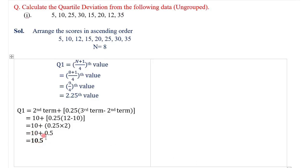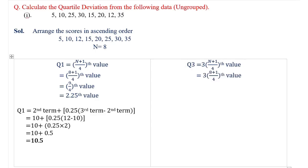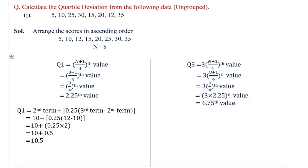Similarly, we will calculate Q3. Q3 is equal to 3×(N+1)/4th value, that is equal to 3×(8+1)/4th value. That is equal to 3×9/4, which becomes 3×2.25, that is equal to 6.75th value.